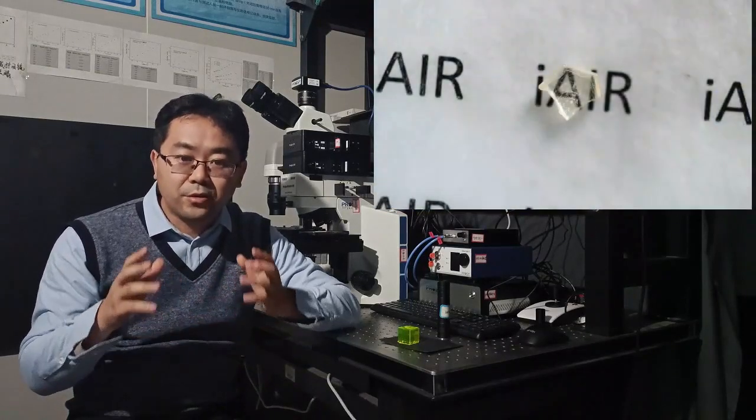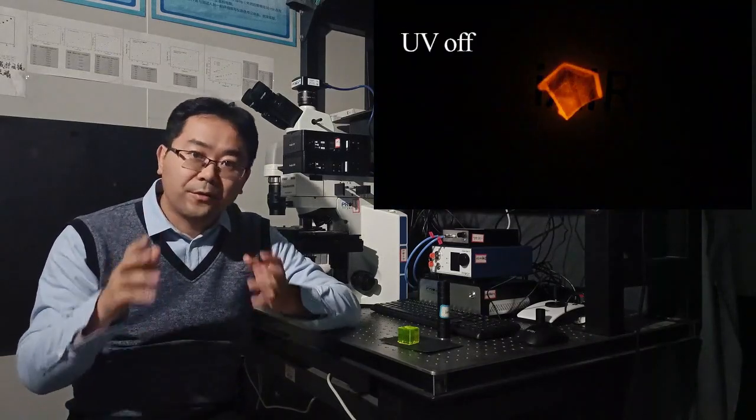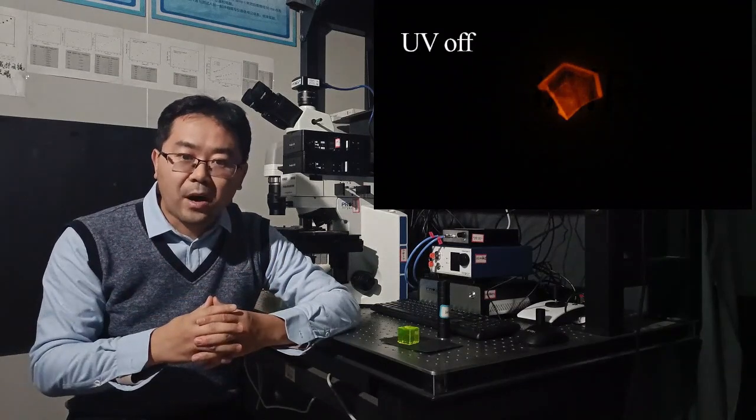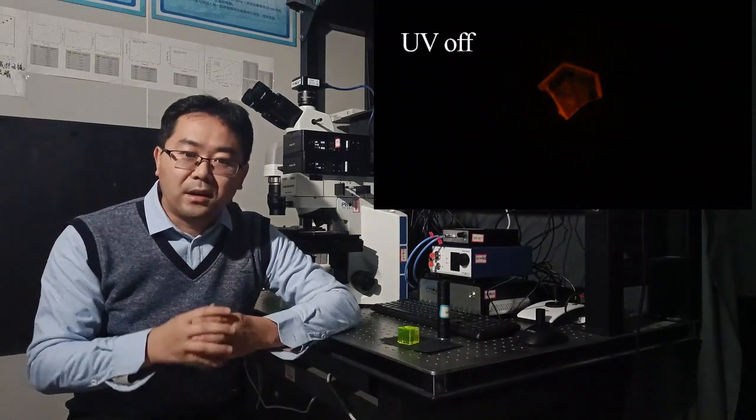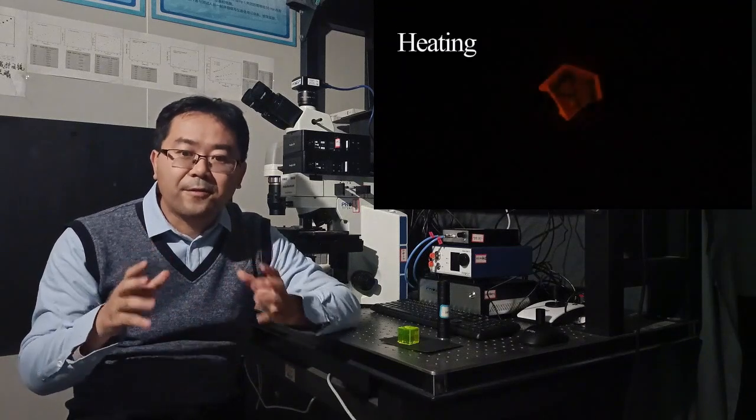In 2020, we successfully activated a pure red afterglow lasting for 1.5 hours in chloride double perovskite. That was the first time an afterglow phosphor was prepared in solution at relatively low temperature.